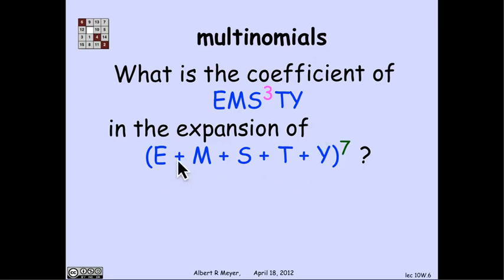So if I multiplied this out, applying the distributive law, I would wind up with five to the seventh terms, each of them consisting of a permutation of the letters e, m, s, t, and y. And if I ask, what's the coefficient in that expansion of the term e·m·s³·t·y? It's exactly the number of ways of permuting these five letters, a word of length seven made out of these five letters with three occurrences of s.